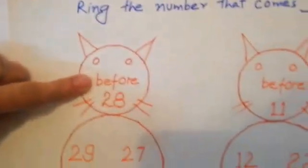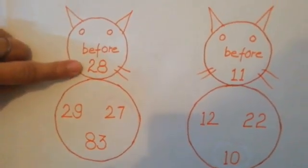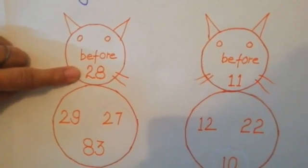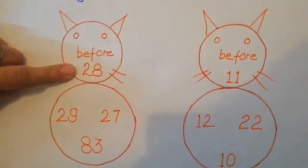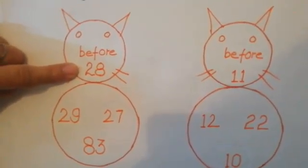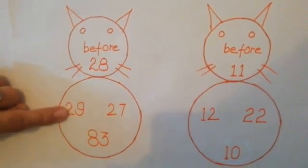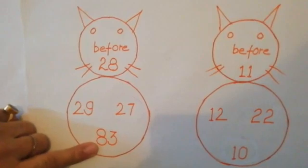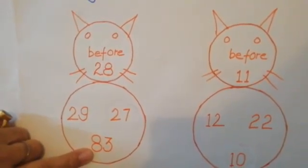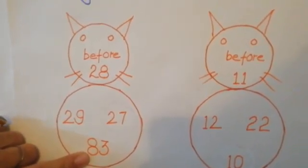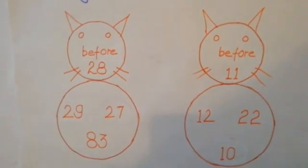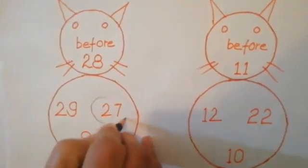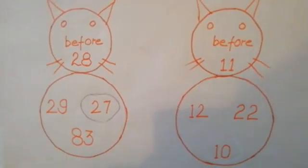What is written here? Before. And which number is this? 28. What comes before 28? 29, 27, 83. Now tell me what number comes before 28? 27. We will ring this number.